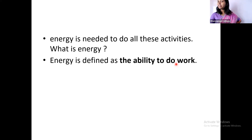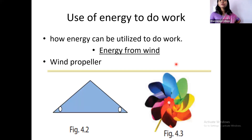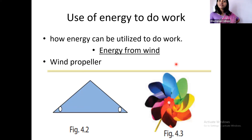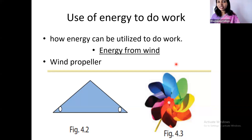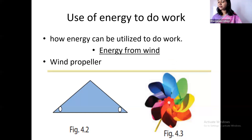Now first of all in our lesson we are going to see whether energy can really do work. We have a lot of natural energy sources like wind and sun. We are going to see whether we can use these energy sources to get our work done. First, to learn whether the wind can give us energy or wind can do work for us, we are going to make a wind propeller. So what do you see here? We are seeing a wind propeller.